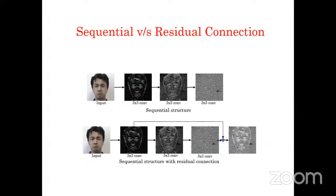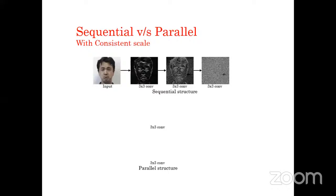To explain this intuitively: imagine you have an old album photo with some dust. You want to remove the dust, so you rub it with a cloth — that's like a filtering operation. But if you keep repeating this operation again and again in the same location, instead of only removing dust, you also remove the actual image information. That is what happens in sequential structures.